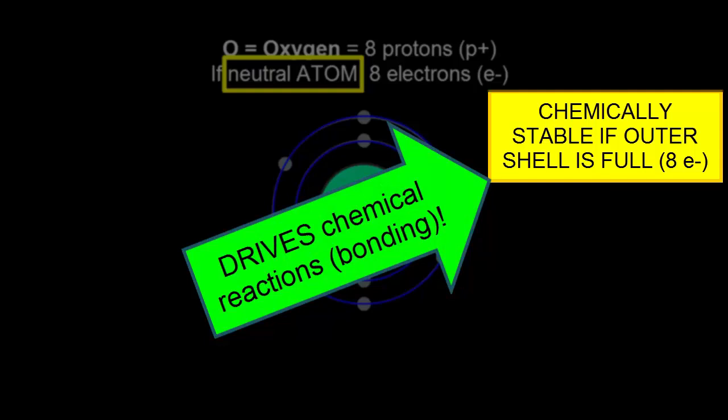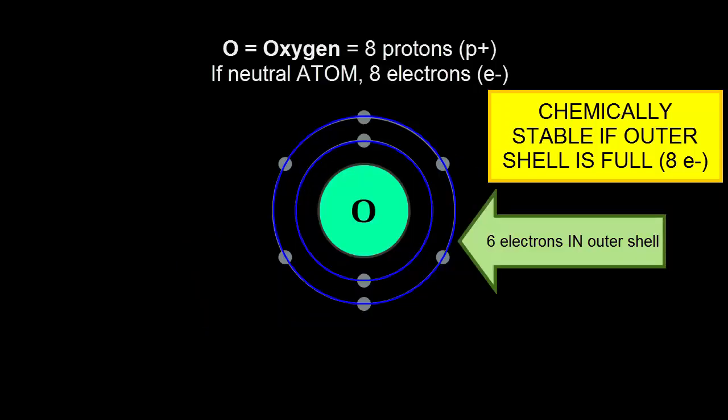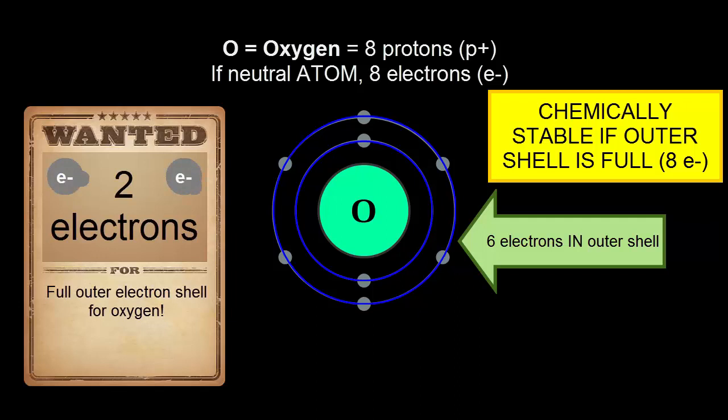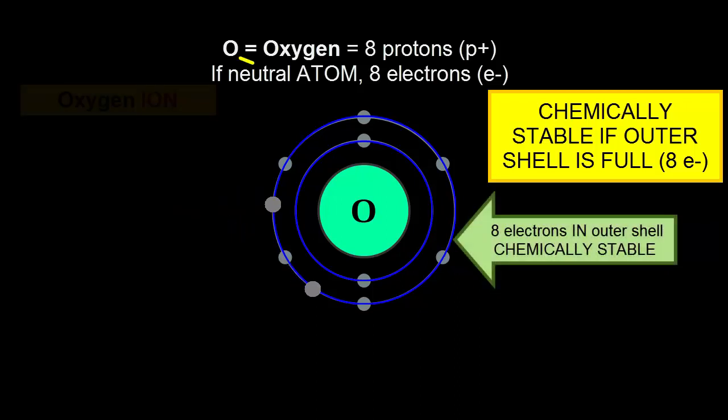Atoms bond with each other in ways to help create full outer electron shells. For example, oxygen wants two more electrons. If oxygen could get two more electrons, would it be neutral any longer? No. What would be its net charge?